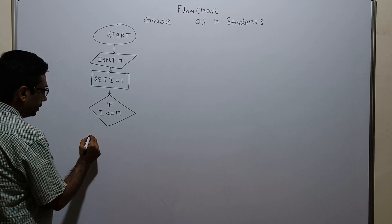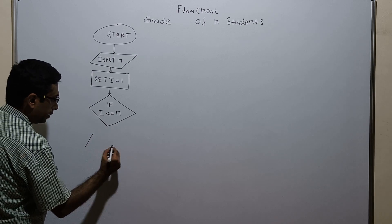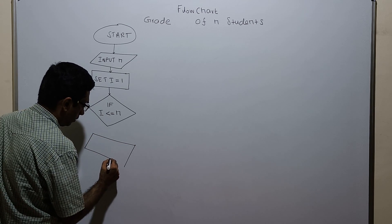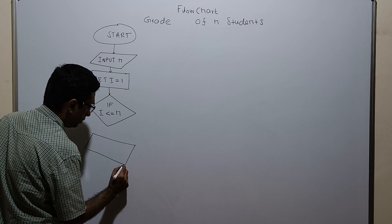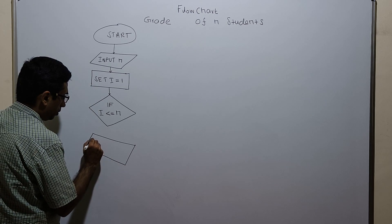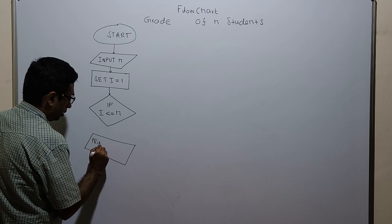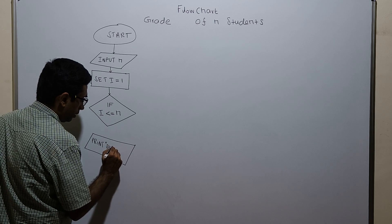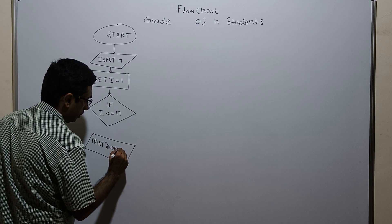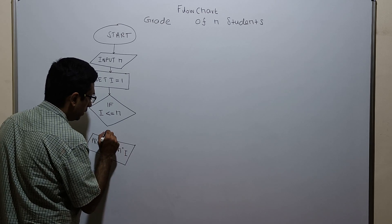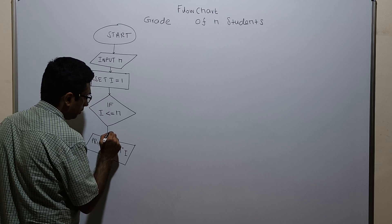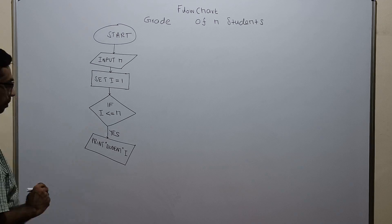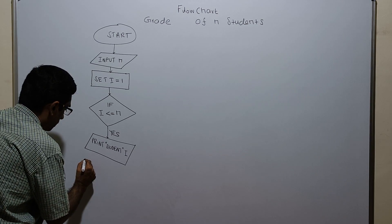If i is less than or equal to n, I am displaying the student number powered by variable i. Initially it will print 'Student 1'. If the condition i less than or equal to n is yes, I am applying the input for the 5 subject marks.